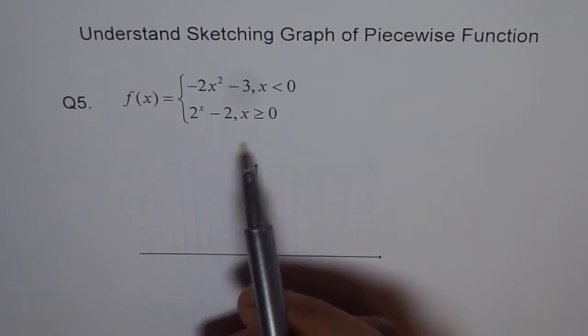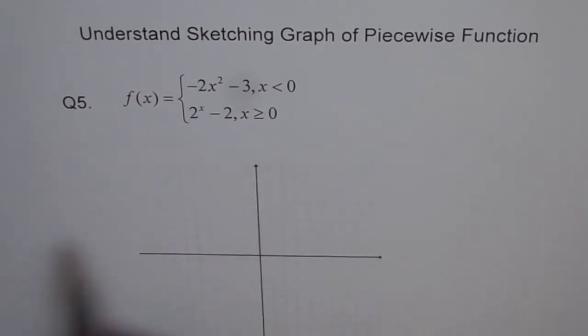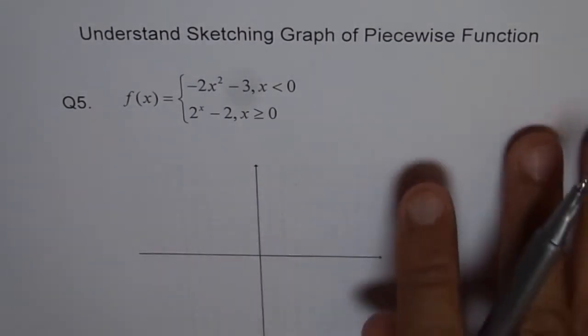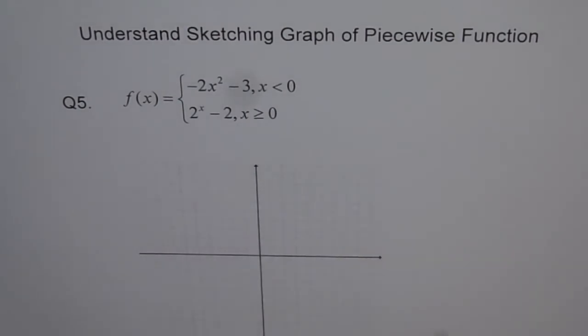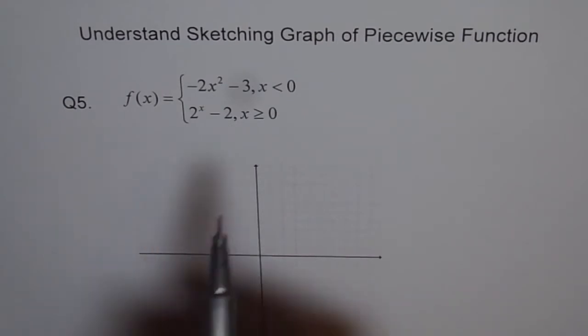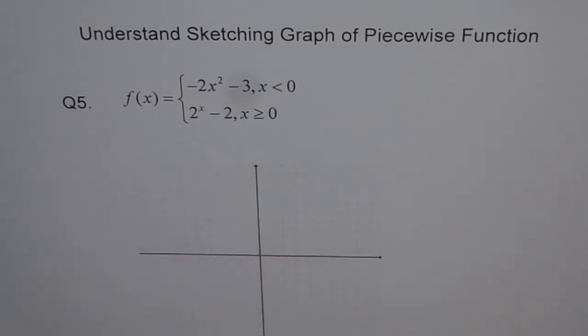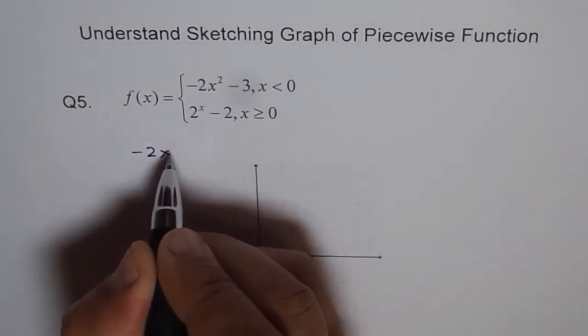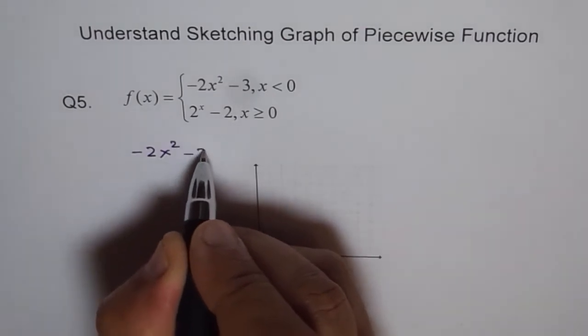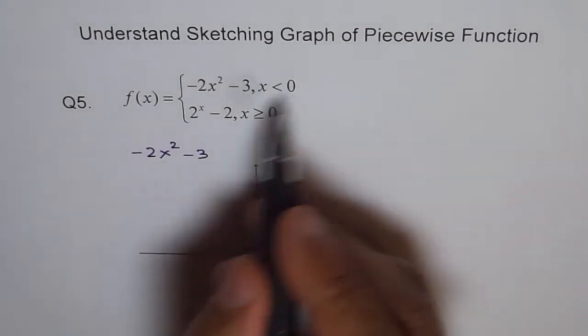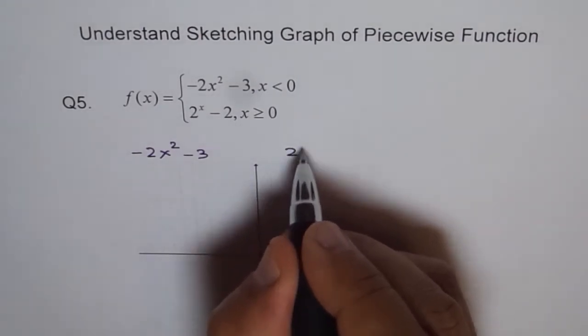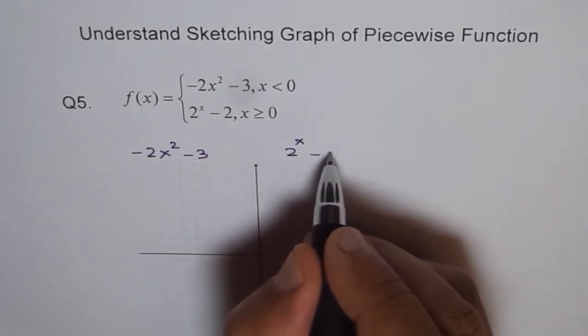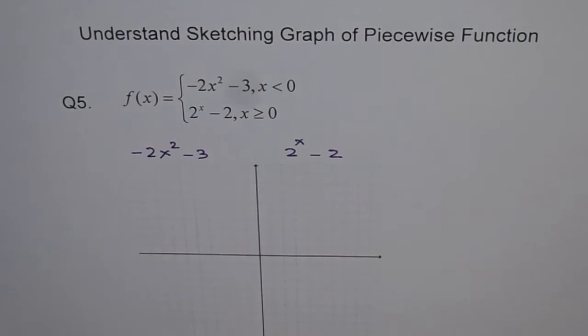So when we are trying to do this, now let me do my rough work here around the graph itself rather than showing you on the side since you understand how things should look like. So here we can say that this side of the function is -2x² - 3, when x is less than 0. And that side is 2^(x-2).